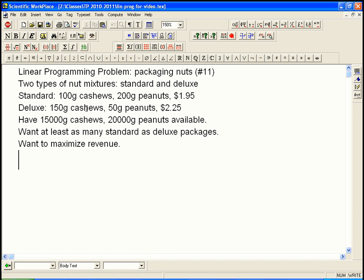The deluxe has more cashews because they're yummier, but more expensive. 150 grams of cashews, 50 grams of peanuts, that's $2.25. We have 15,000 grams of cashews and 20 kilograms or 20,000 grams of peanuts available, total. We also want to have at least as many standard as deluxe packages. The goal is to maximize the revenue.